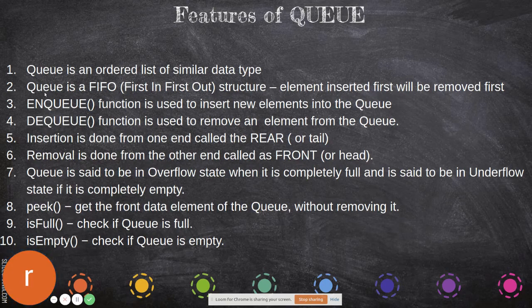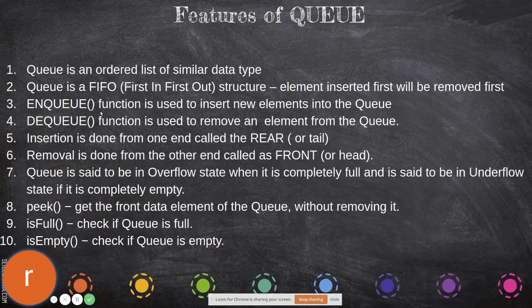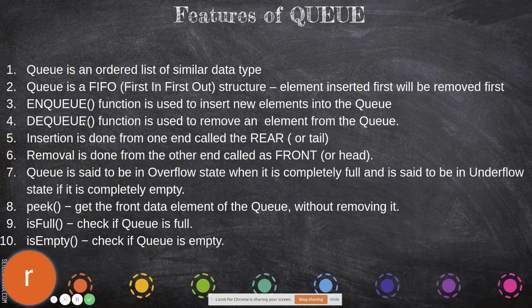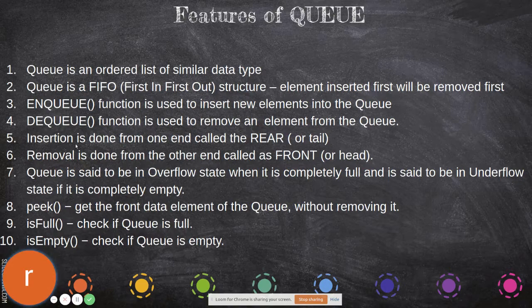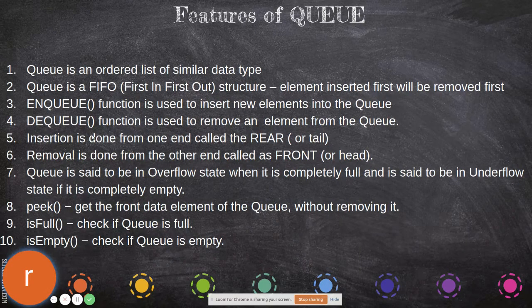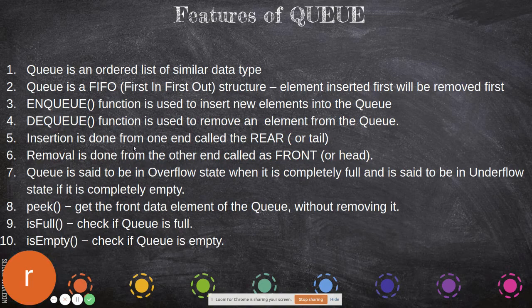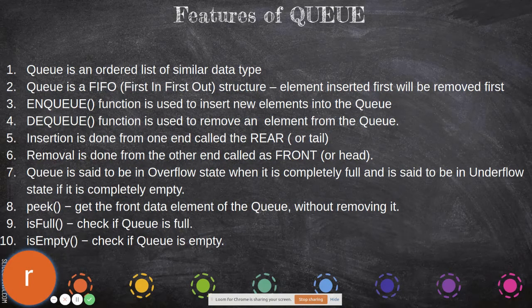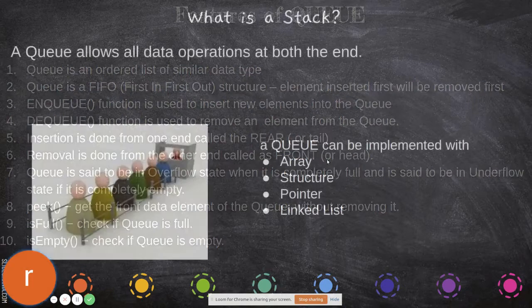Enqueue is adding data, and it can be done only at the rear. Dequeue is removal of an element from the queue. Insertion is done from one end called rear, and removal is done from the other end called front. This is the front where you remove, and this is the rear or tail where you add data.